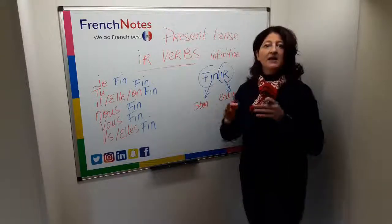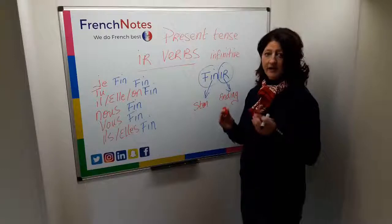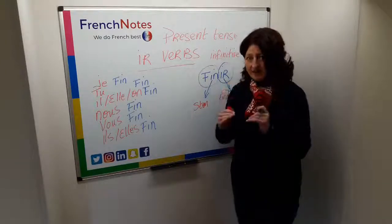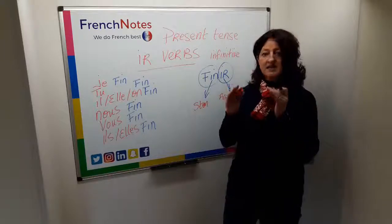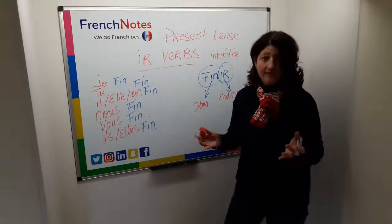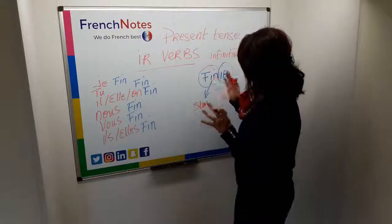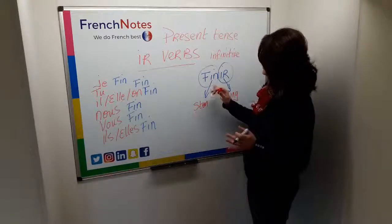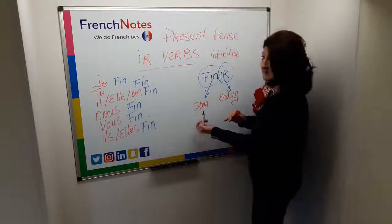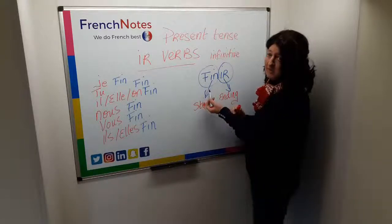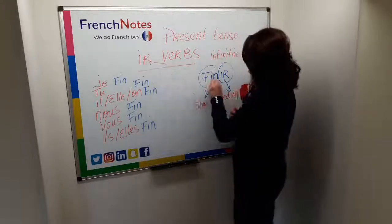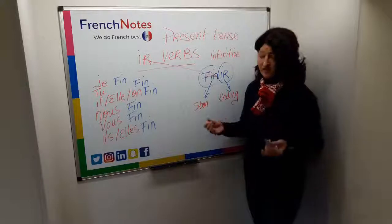So to get the present tense of an -IR verb, you first have to get the verb that you're looking for in the infinitive. The infinitive is the entire verb, or the verb that you find in the dictionary — it's the verb before you do anything with it. So what you simply do is you take your infinitive and you notice that in French it's divided in two: the stem, which is the 'fin' part, and the ending, which is -IR because it's an -IR verb. So you can see that French is quite logical.